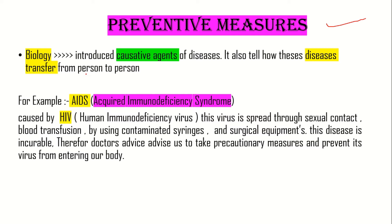We have a virus that is HIV. HIV is a virus called Human Immunodeficiency Syndrome. This virus spreads through sexual contact. Blood transfusion from one person to another person is also a route of transmission.